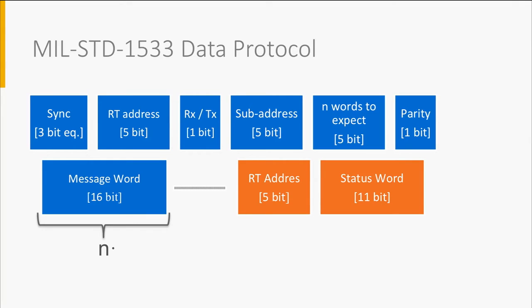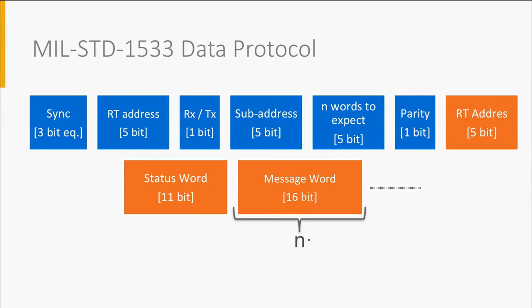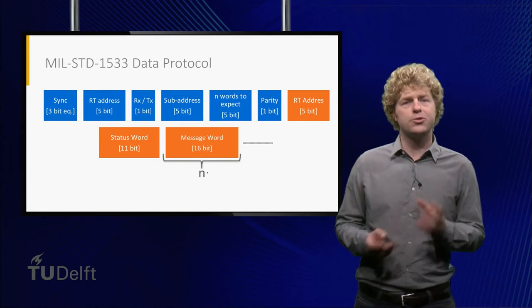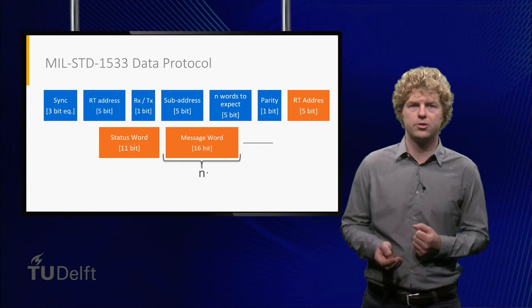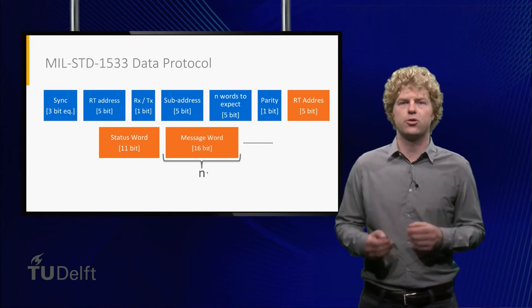In case of a transmission, the header is followed by the message of n times 16 bits. The receiver subsequently acknowledges the reception by transmitting its address and providing a status word to indicate good reception or faults. For receiving, the order is slightly different: the remote terminal first responds with its address and status word, followed by the message word of again a multiple of 16 bits. There are also different sequences which only contain status words or allow communication between remote terminals, but in all cases the bus controller leads the transaction.